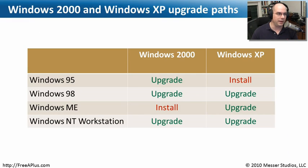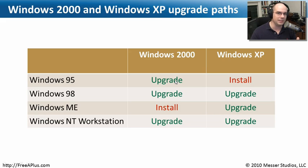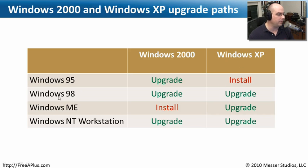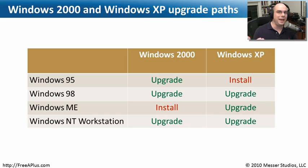You can't do that for just any operating system. These are the upgrade paths. If you want to go from Windows 95 to Windows 2000, you can just slide in the Windows 2000 CD and click Upgrade. But if you want to go from Windows 95 to Windows XP, you have to do a clean install. You're expected to know this for the CompTIA exam. For Windows 2000, you can upgrade from Windows 95, 98, and NT — but not from Windows Millennium. For Windows XP, you can upgrade from 98, ME, and NT, but not from Windows 95.